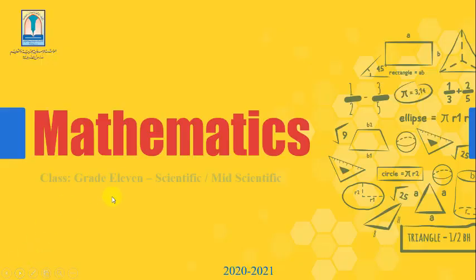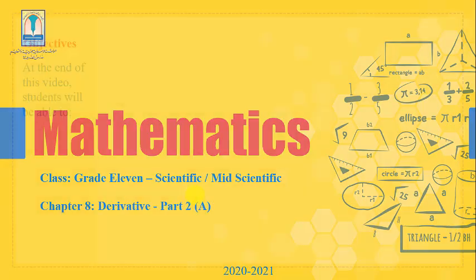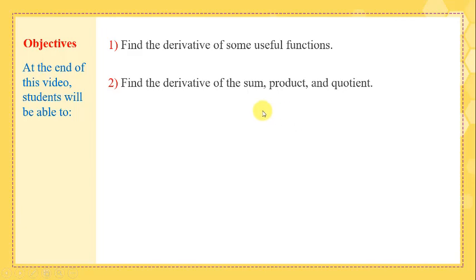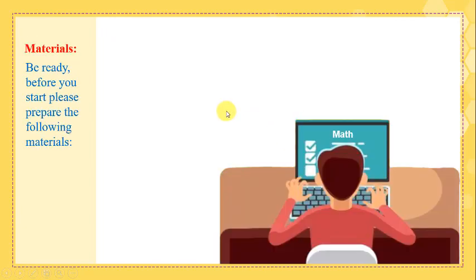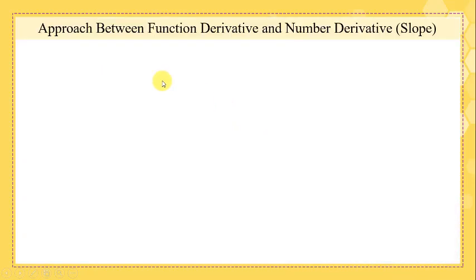Assalamu alaikum dear students. We will continue chapter 8, Derivative, Part 2. The objectives are: find the derivative of some functions, and find the derivative of some products and quotients. Let's start. The approach is between function derivative and number derivative.